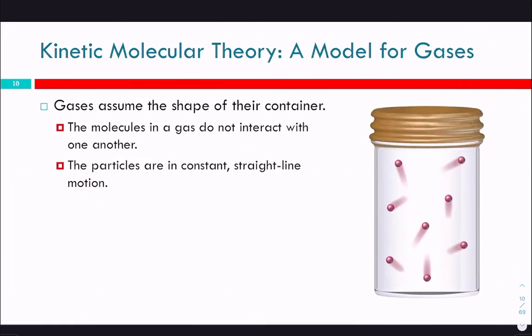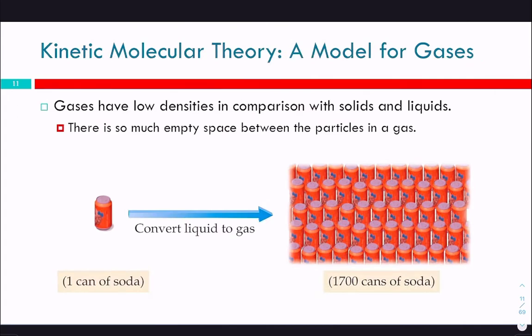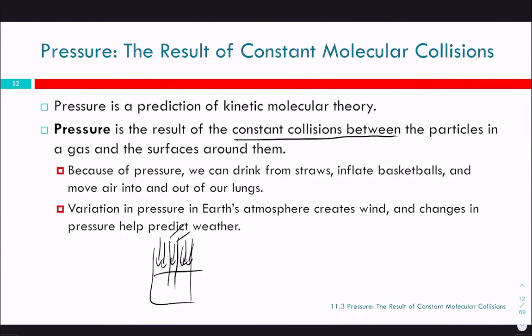Gases assume the shape of their container because they're moving in constant straight-line motion, so eventually some will find their way into every part of the container. Gases also have low densities compared to solids and liquids, because of the space between particles. If particles are bumped up next to each other in, say, a can of soda, and we put all that space in between them, we'd go from one can of liquid soda to 1,700 cans of soda gas.